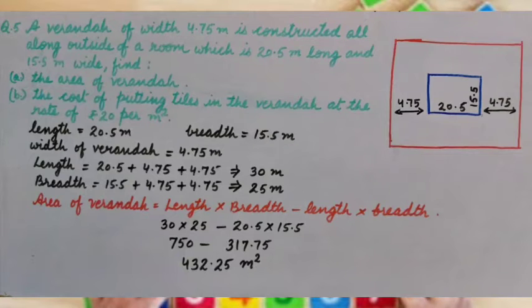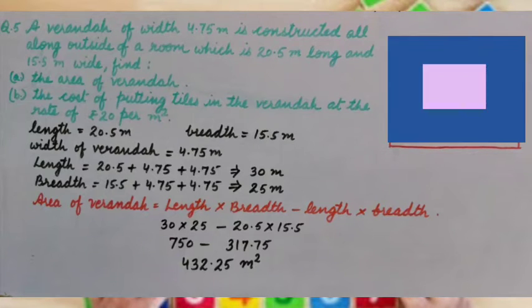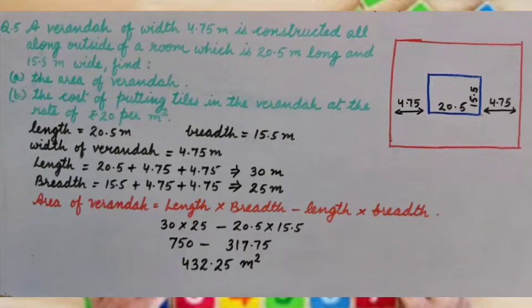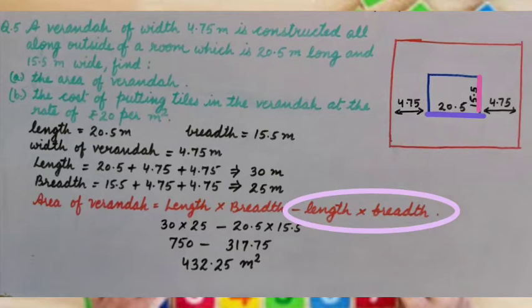Area of veranda we can find by area of outer rectangle minus area of inner rectangle. So, length of outer rectangle multiplied by breadth of outer rectangle minus length of inner rectangle multiplied by breadth of inner rectangle.